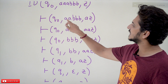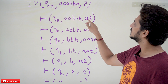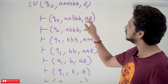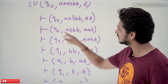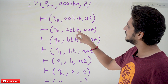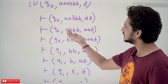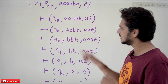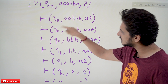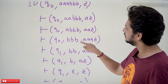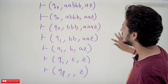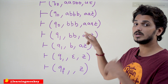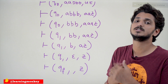Taking the second input 'a' with stack top 'A', we push 'A' and stay on q₀: (q₀, abbb, AAZ). Taking the third input 'a' with stack top 'A', we push again and stay on q₀: (q₀, bbb, AAAZ). Now taking input symbol 'b' with stack top 'A', we move to state q1 and pop the element present on the stack.